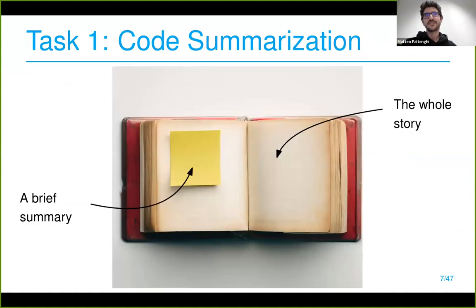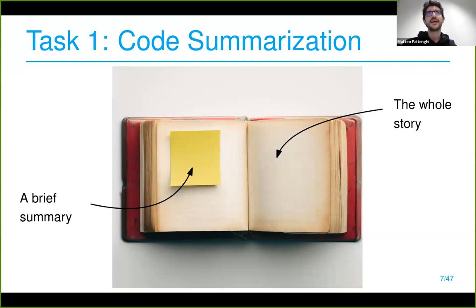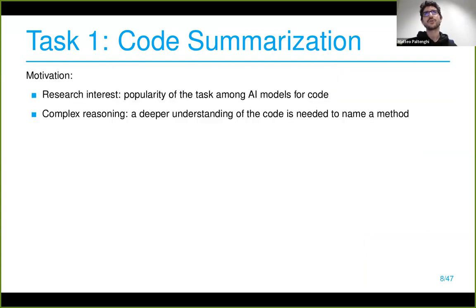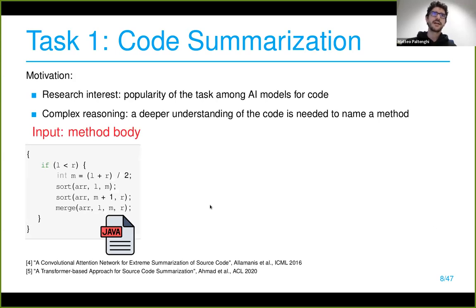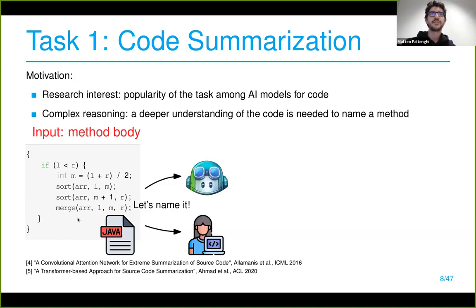The first task is code summarization. The idea is that we have a whole method — part of our code — and we want a brief summary. We focus on this task because it was widely popular when we did this study two years ago and it still is of interest to the research community. We also argue it requires a deeper understanding of what the code is doing in order to give a proper name.